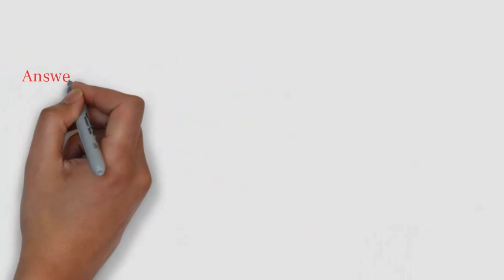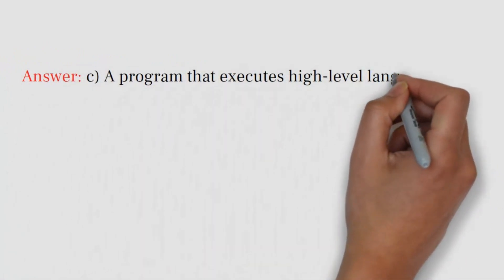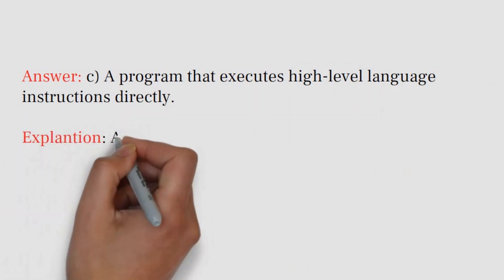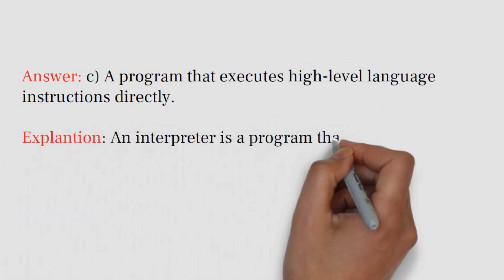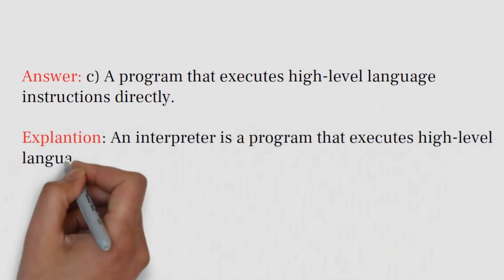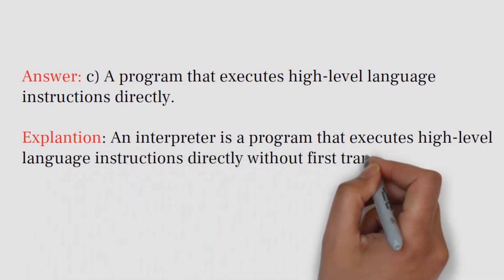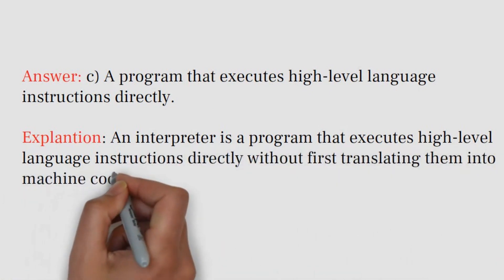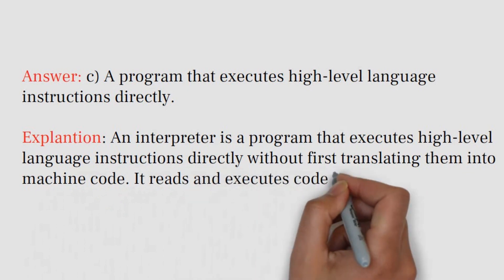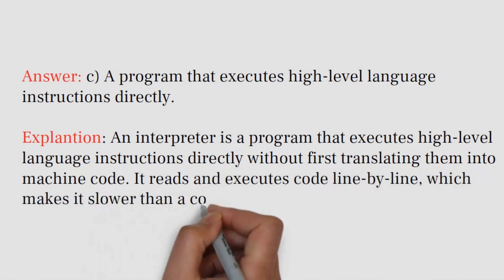Answer: C. A program that executes high-level language instructions directly. Explanation: An interpreter is a program that executes high-level language instructions directly without first translating them into machine code. It reads and executes code line by line, which makes it slower than a compiled program.